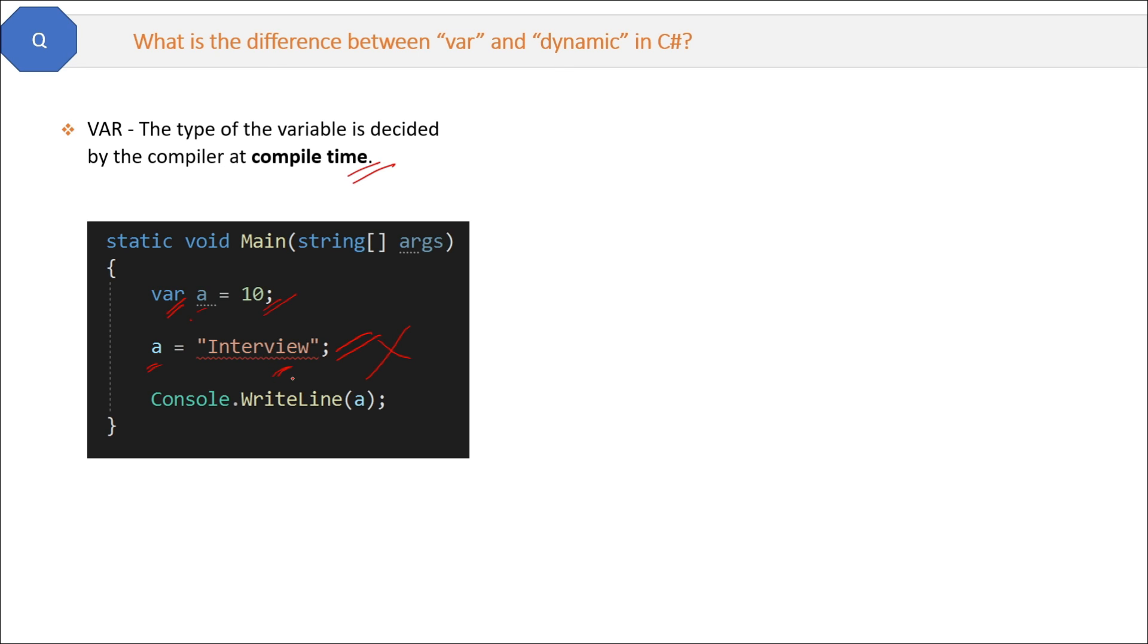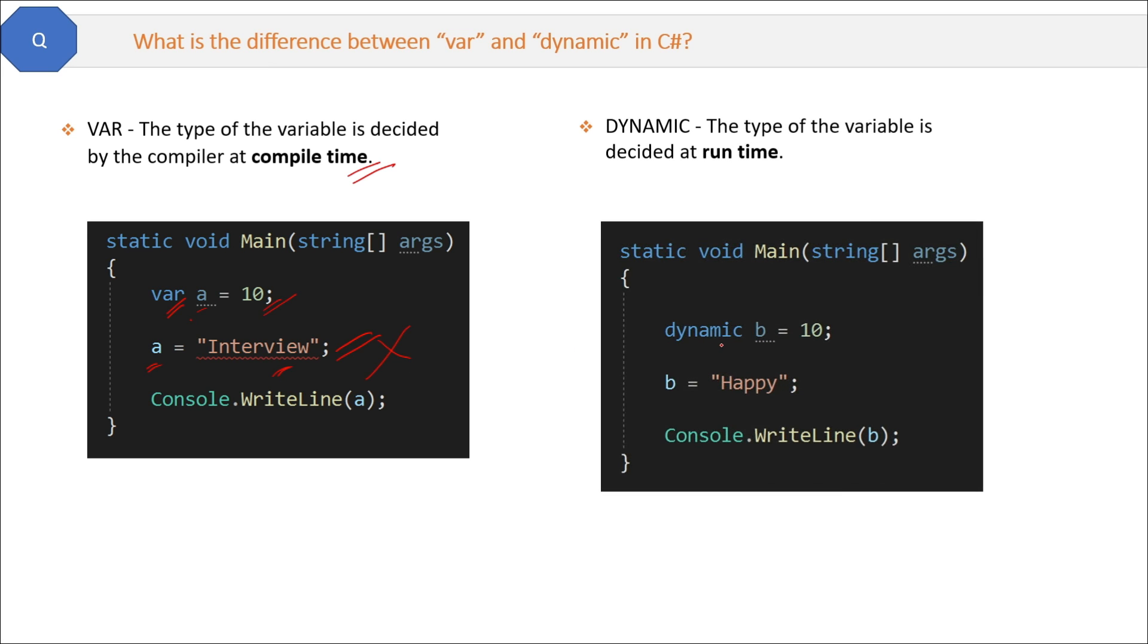Now let's see dynamic. If you declare a variable dynamic, then the type of the variable is decided at runtime, not compile time. See the same code here; just var is replaced by the dynamic keyword.